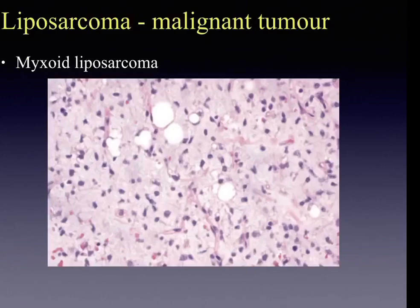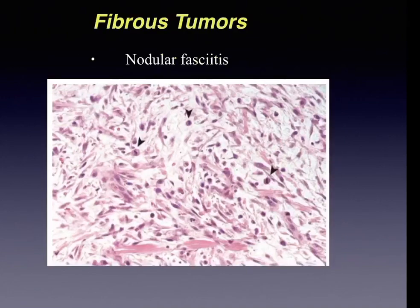Among benign fibrous soft tissue tumors, nodular fasciitis is a self-limited fibroblastic and myofibroblastic proliferation occurring commonly in the upper extremities of young adults. The lesion is richly cellular, composed of plump immature-appearing fibroblasts and myofibroblasts arranged in fascicles, surrounded by myxoid stroma.